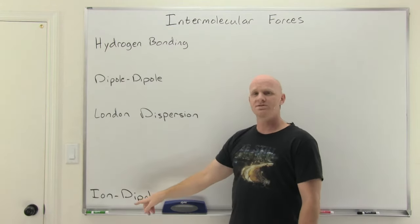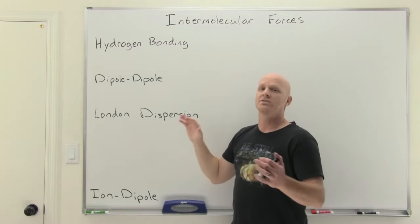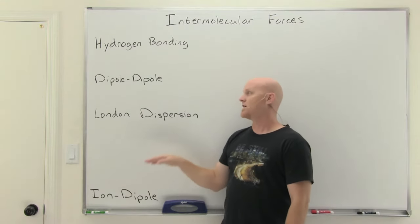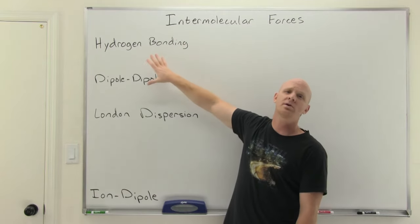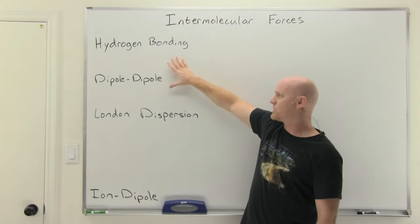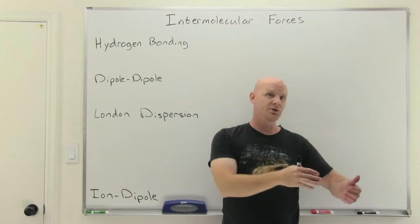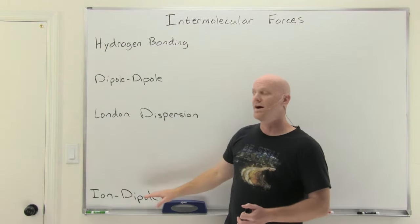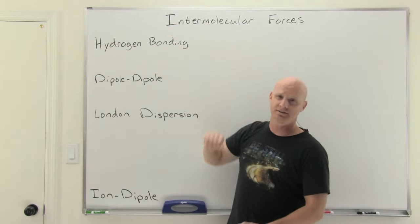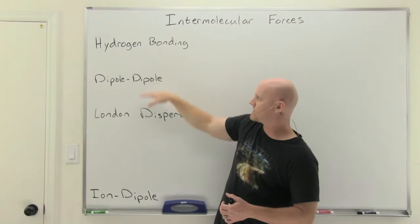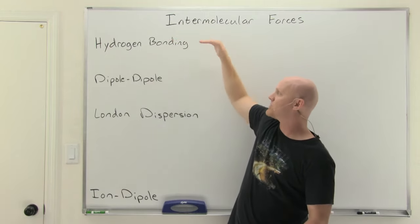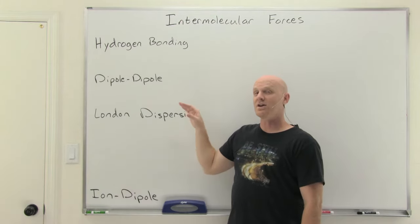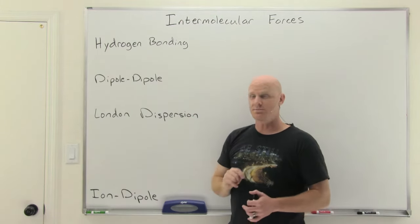Ion-dipole forces can actually be even stronger than any of these, but I'm leaving those out last because they're only going to be present in mixtures, whereas these three can be present in pure liquids or in mixtures. That's useful if we're comparing the boiling points of pure liquids, whereas ion-dipole wouldn't be relevant. As far as just these three go: hydrogen bonding is the strongest, then dipole-dipole, then London dispersion — assuming all molecules are similar in size.